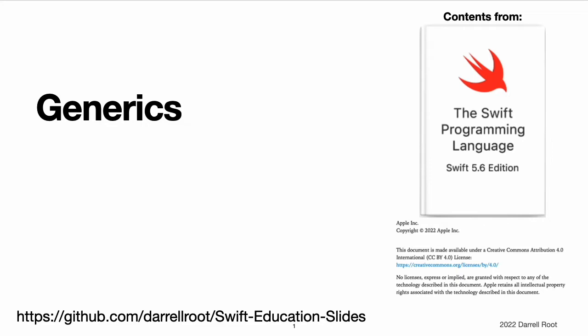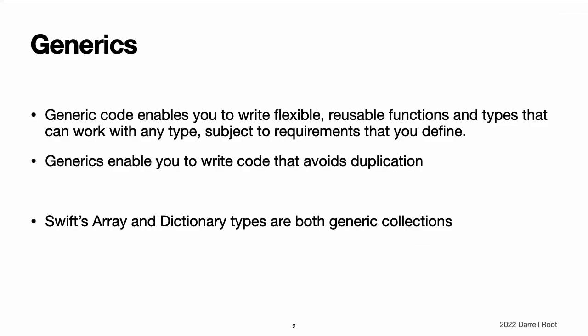Generics. Generic code enables you to write flexible, reusable functions and types that can work with any type, subject to requirements that you define. You can write code that avoids duplication and expresses its intent in a clear, abstracted manner. Generics are one of the most powerful features of Swift, and much of the Swift standard library is built with generic code.